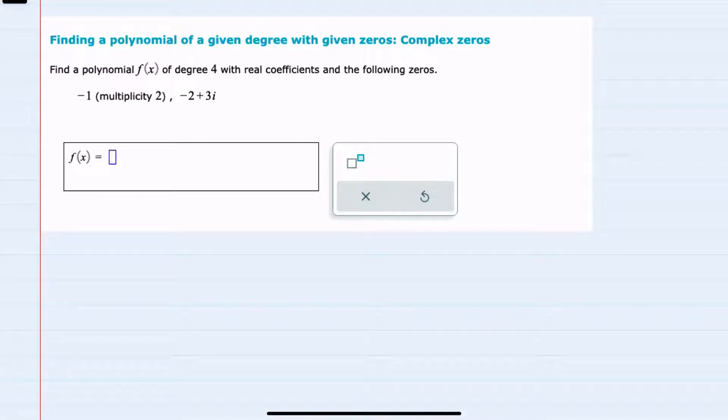In this video, I'll be helping you with the Alex problem type called finding a polynomial of a given degree with given zeros, complex zeros.